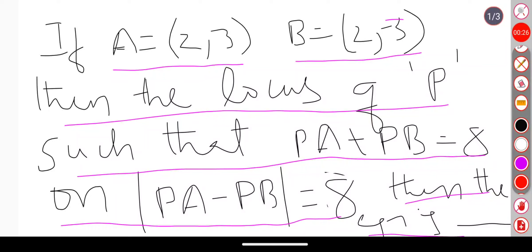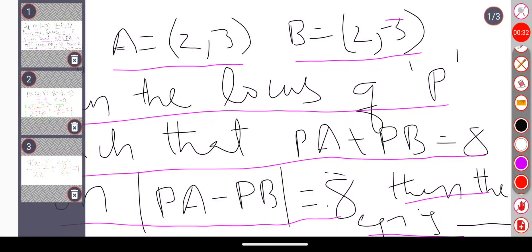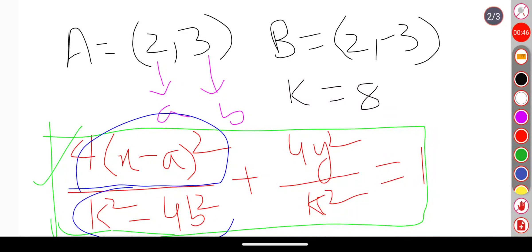In order to solve this problem, we have one shortcut present in our EAMCET and IIT. The shortcut is: 4 times (x minus a) whole square by k squared minus 4b squared plus 4y squared by k squared equals 1.